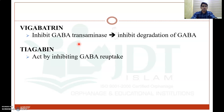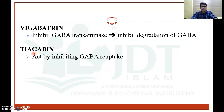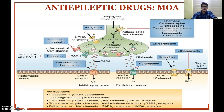Another drug is vigabatrin, which inhibits GABA transaminase — the enzyme responsible for degradation of GABA. By inhibiting GABA transaminase, it inhibits the degradation of GABA, potentiating the inhibitory neurotransmitter effect and facilitating GABAergic action. Another drug is tiagabine, which acts by inhibiting GABA reuptake from the synaptic site; its mechanism of action is inhibiting GABA transporters at the synapse.